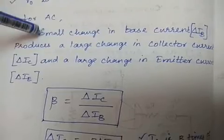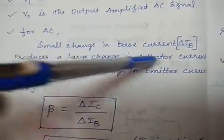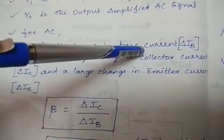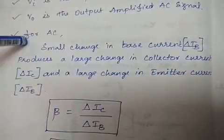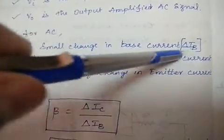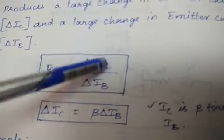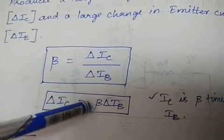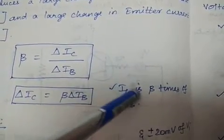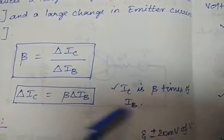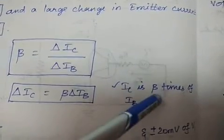For AC signals, a small change in base current produces a large change in collector current. We know the base current is the smallest current compared to the collector current. So even a small increase in base current produces a large increase in collector current. For varying currents, beta equals delta-Ic divided by delta-Ib, so delta-Ic equals beta times delta-Ib. Since beta is always greater than 1, output current will always be greater than input current, and current amplification is achieved.